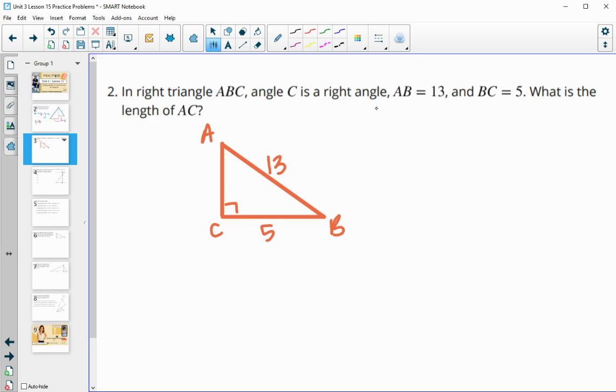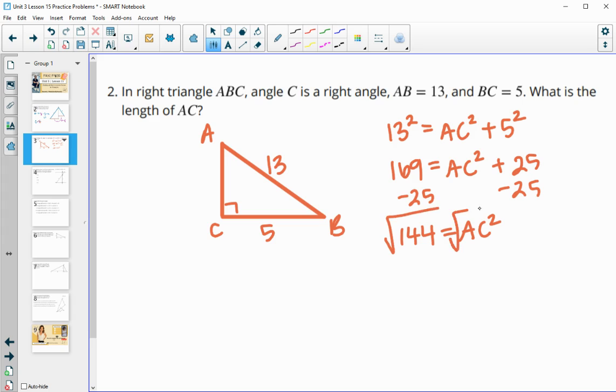BC is 5. And we're looking for AC. So we'll do the Pythagorean theorem. So we know that Pythagorean theorem is the hypotenuse squared is equal to the two legs, AC and BC, or 5, squared and added together. So we'll square the hypotenuse, 169. We still have this missing side squared. And then plus 5 squared, which is 25. Subtract 25 from both sides. And you get that AC squared is equal to 144. So then we will square root. And you end up with AC is equal to 12.